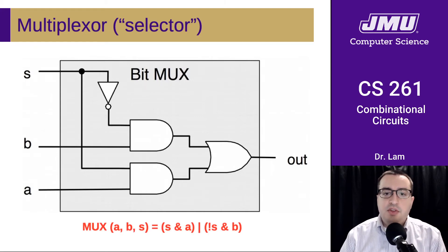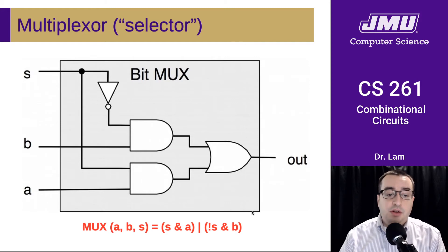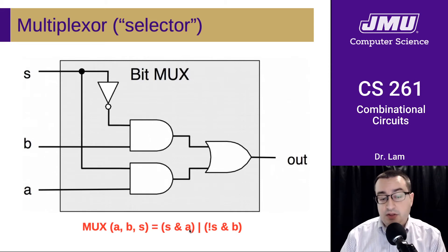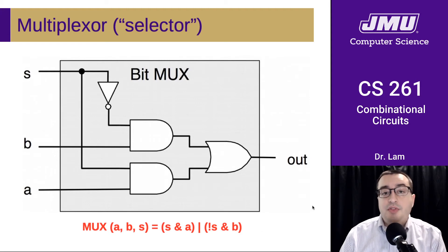The Boolean expression for this circuit is: (S AND A) OR (NOT S AND B). If S is true, then the final value is going to be A — this will be true if A is 1 and S is 1. The opposite is true for B: the output is going to be B only if S is false, because then NOT S is true and the output is whatever B is. That's why we call this a multiplexer or a selector — the S input allows us to select between A and B. If S is true, we get A; if S is false, we get B.